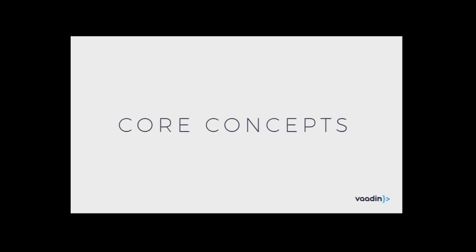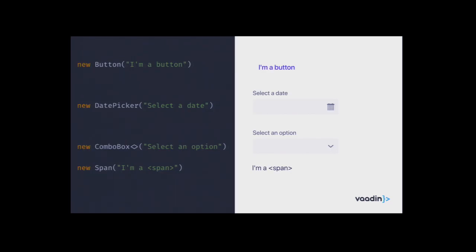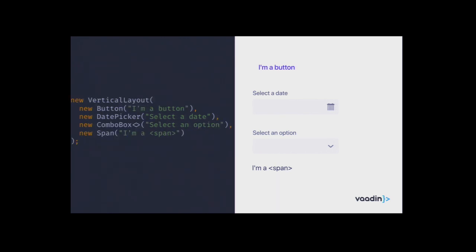Before we get to live coding, let me go through a couple of core concepts. Everything in Vaadin is a component - if you want a button you instantiate a button object, if you want a date picker you instantiate a date picker, same applies to lower-level HTML things like a span. You can decide how to lay these components out by putting them into a layout. A vertical layout puts all components on top of each other, horizontal layout puts them next to each other.